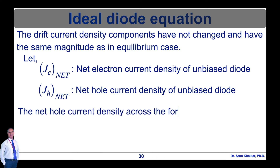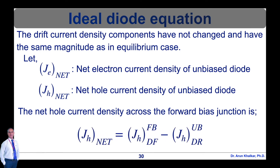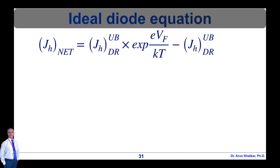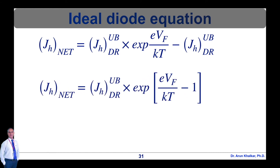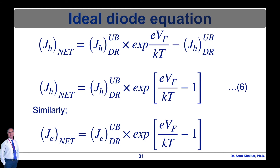Therefore, the net hole current density across the forward bias junction is J_H_net = J_H_DF_FB − J_H_DR_UB — equation 5. This gives J_H_net = J_H_DR_UB × (exp(eV_F / kT) − 1) — equation 6. Similarly, J_E_net = J_E_DR_UB × (exp(eV_F / kT) − 1) — equation 7.